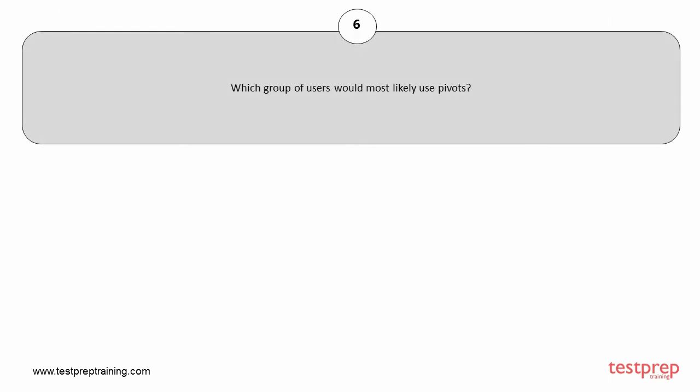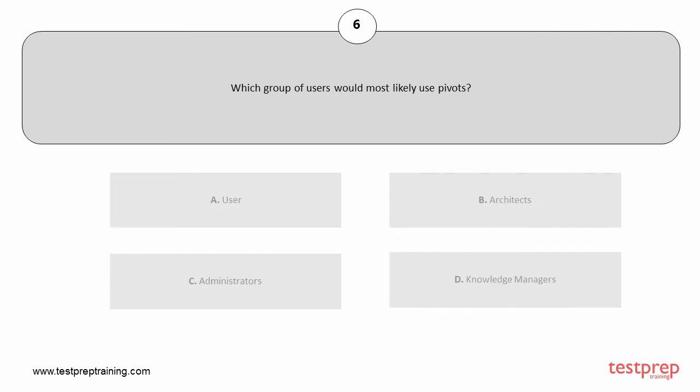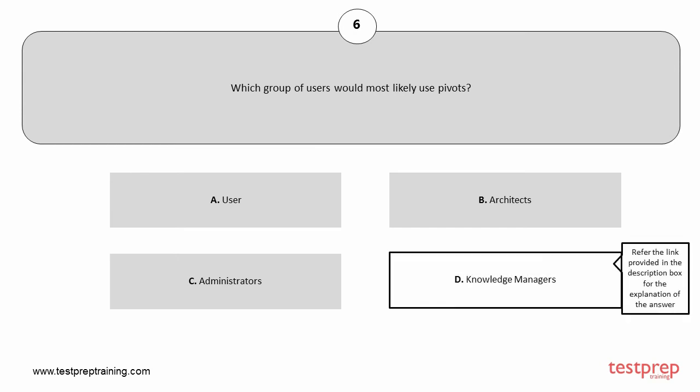Question number 6. Which group of users would most likely use pivots? Your options are: A. Users. B. Architects. C. Administrators. D. Knowledge Managers. The correct answer is option D.